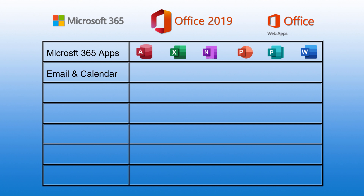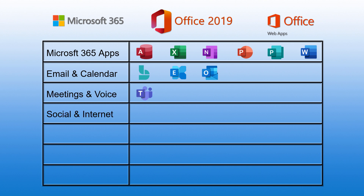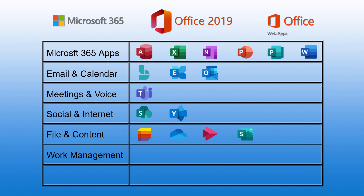Then we have Email and Calendar, which includes Bookings, Exchange, and Outlook. Then Meetings and Voice, which is Teams. Social and Internet includes SharePoint and Yammer. File and Content includes Lists, OneDrive, Stream, and Sway. Then there is Work Management, more for business users, which includes MileIQ, Planner, PowerApps, PowerAutomate, PowerVirtual Agents, and To-Do.